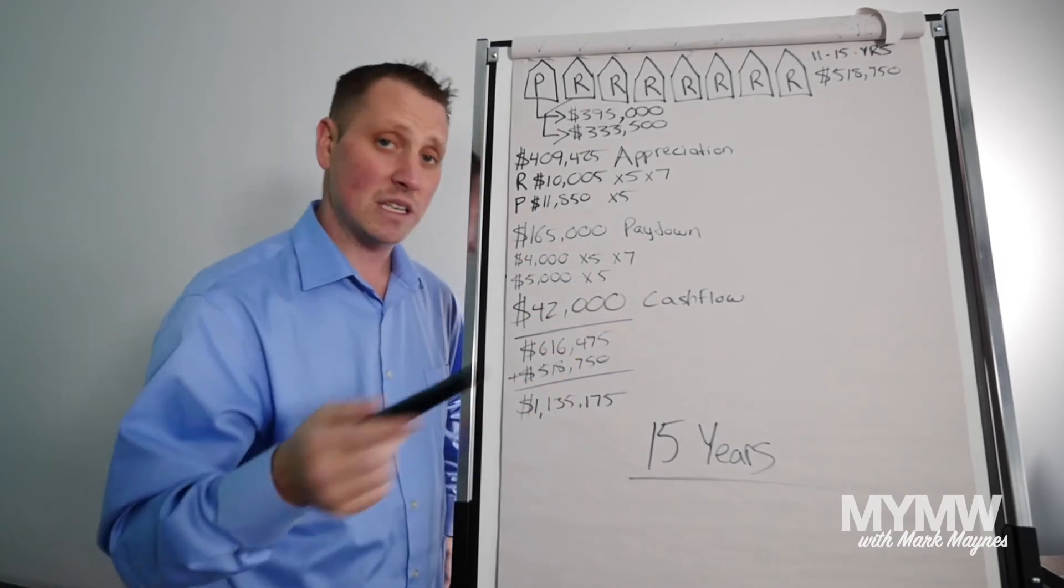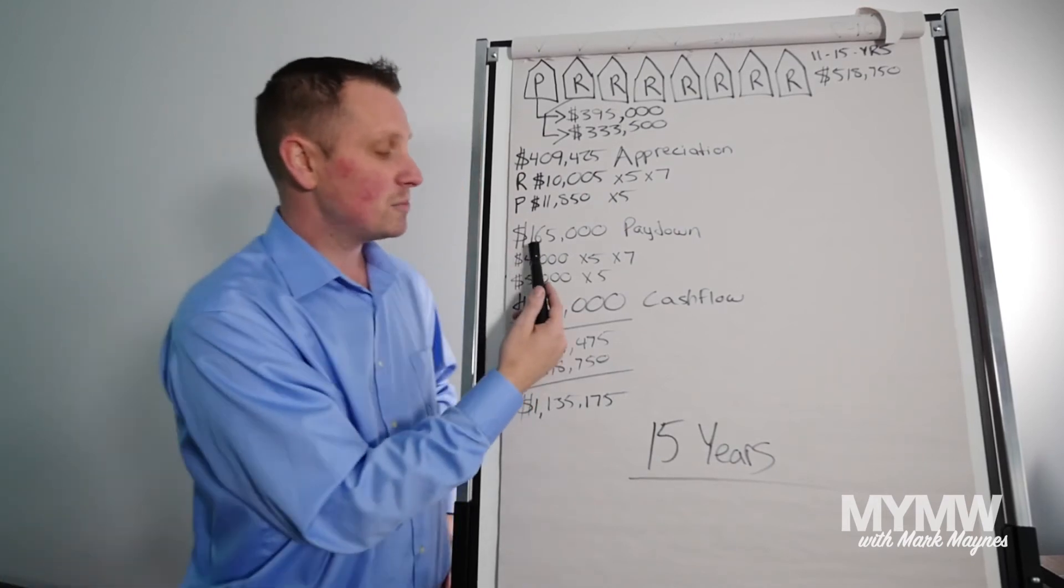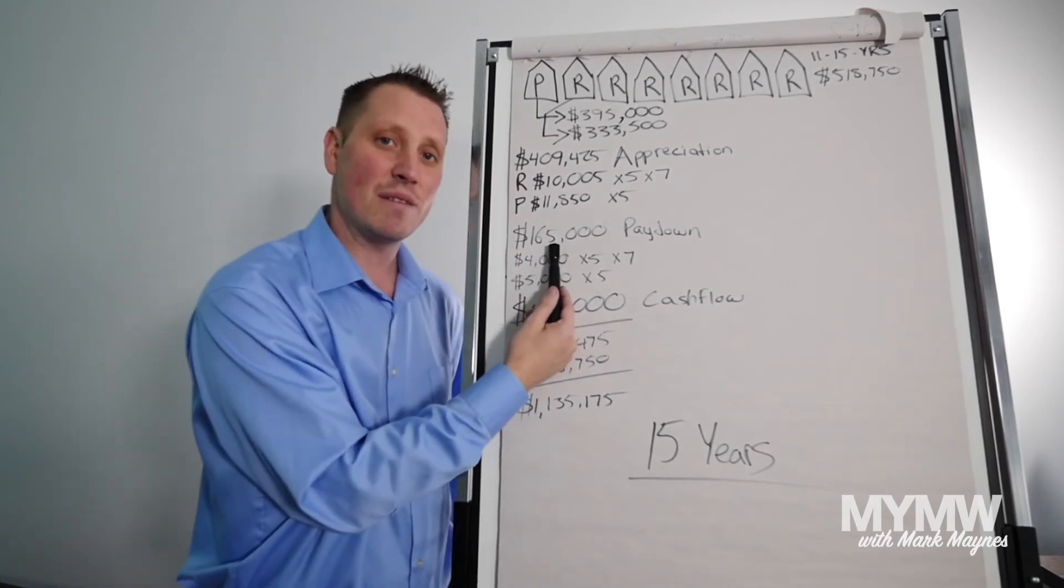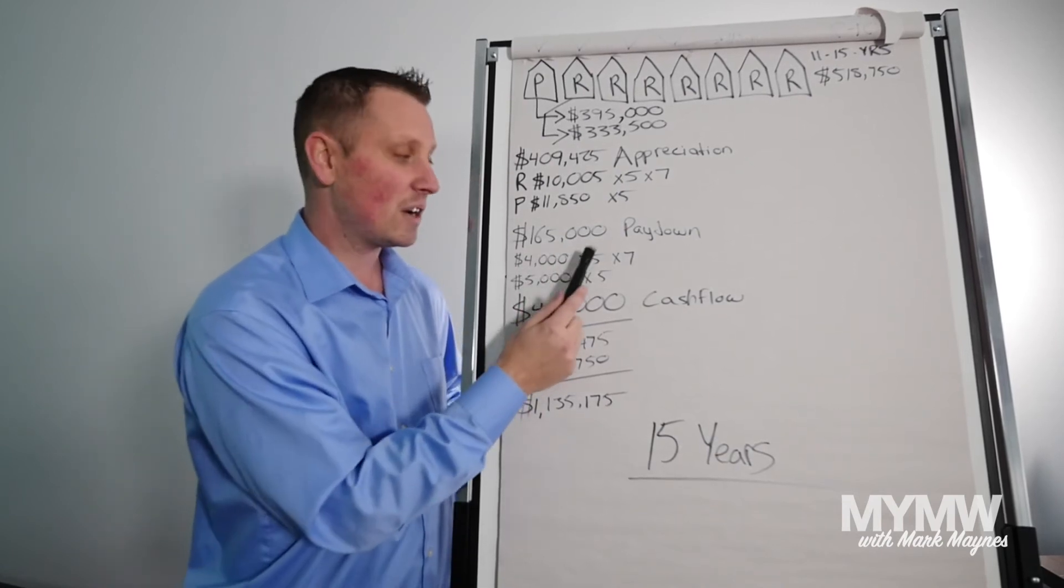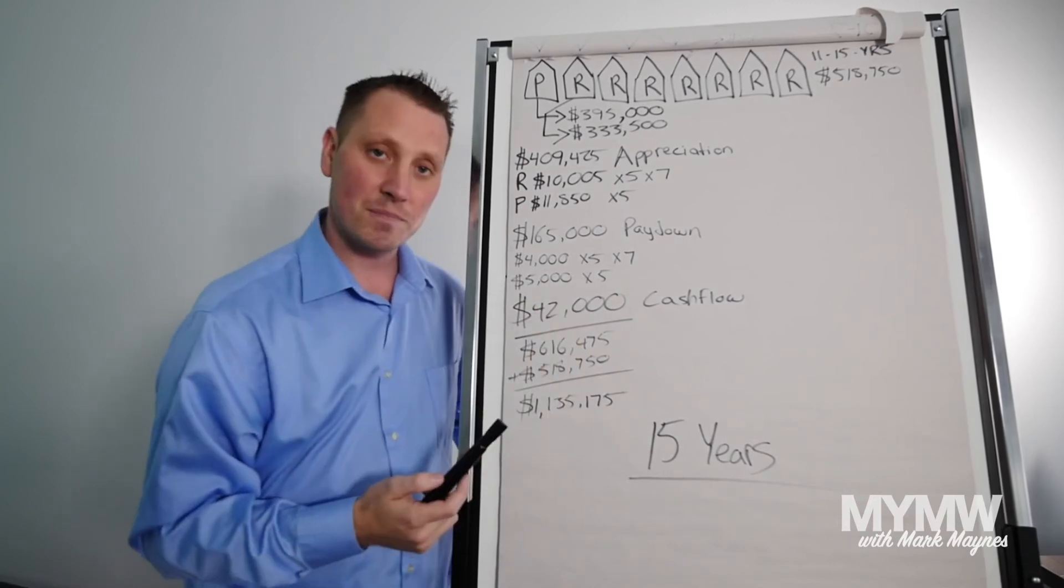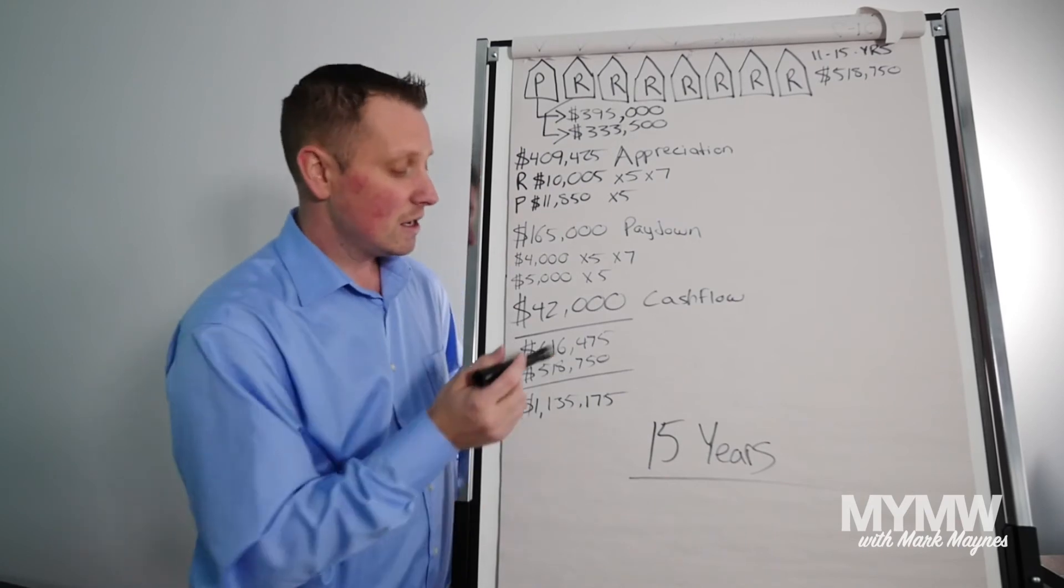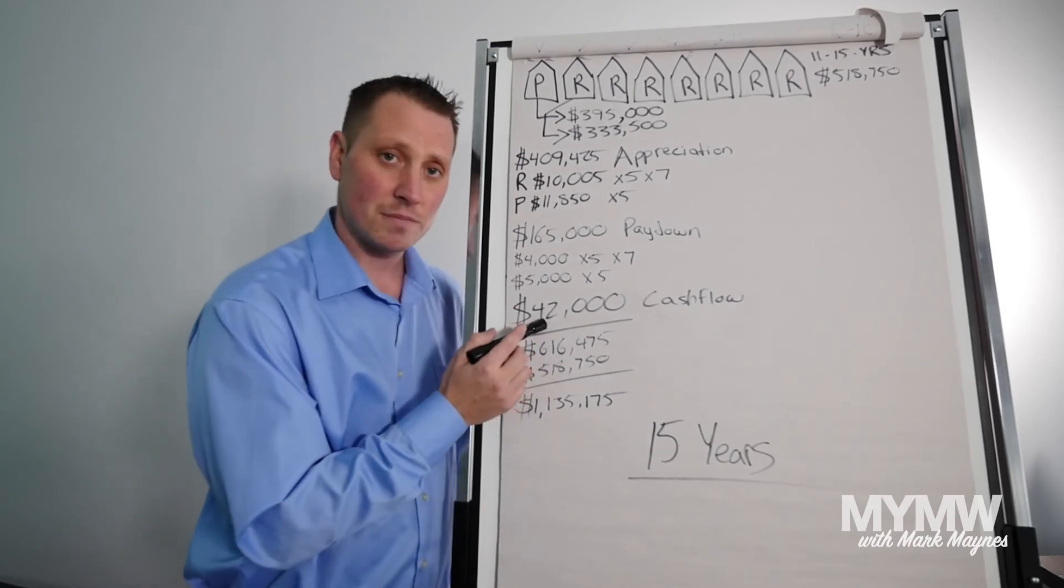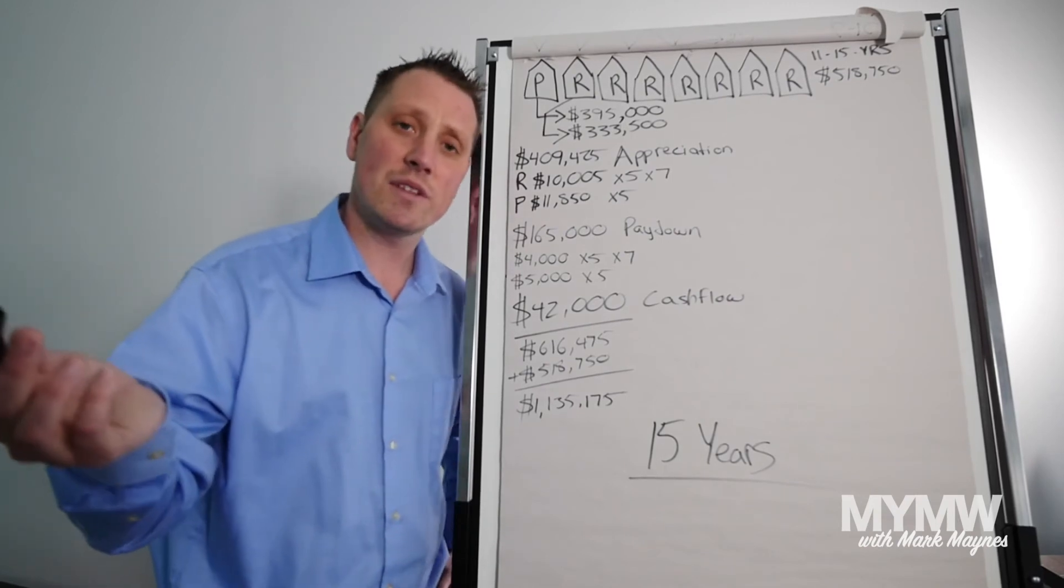Your mortgage paydown, because every time you make a payment to the bank, you owe less to the bank, right? So your mortgage paydown is $165,000. How did I get that? $4,000 a year times five times seven. Personal, $5,000 a year times five. Cash flow, that's money coming in your pocket every single month, $42,000. That's a nice chunk of change, right? A couple vacations without even thinking about it.